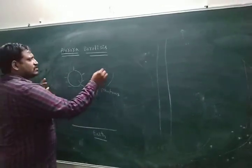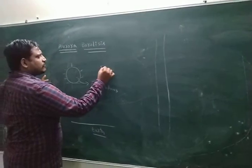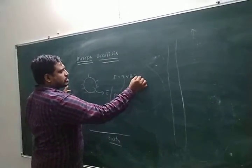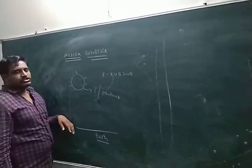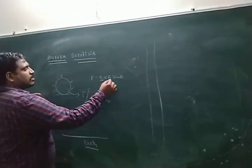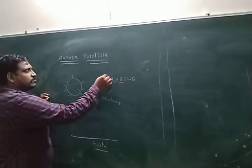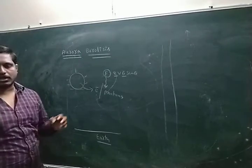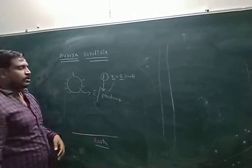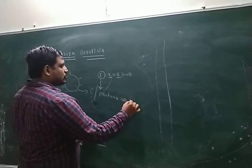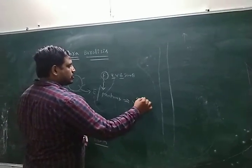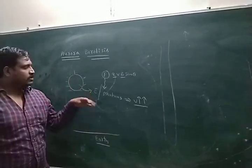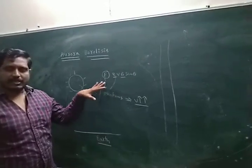Yesterday I discussed: charged particles move in a magnetic field. The force formula is F = QVsinθ. In this situation, charged particles in the magnetic field experience a force. Due to this force, their velocity increases. Simply, charged particles released from the sun attain a high velocity.